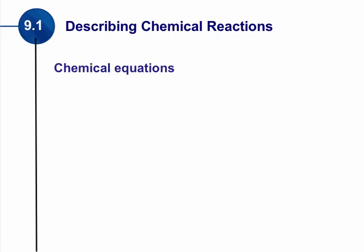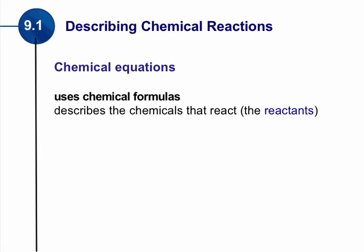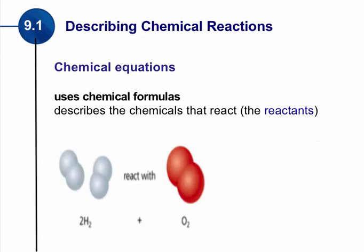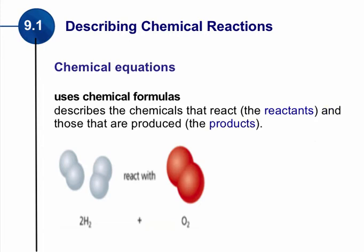One of the ways we can describe a reaction is through a chemical equation. What's nice about chemical equations is we're going to use our chemical formulas — formulas we've already developed — to describe chemicals that are going to react. We call these chemicals that react the reactants. If we were describing the chemical equation for water, we could start with hydrogen and oxygen, so two hydrogen molecules react with one oxygen molecule, and once they react, they are going to produce something.